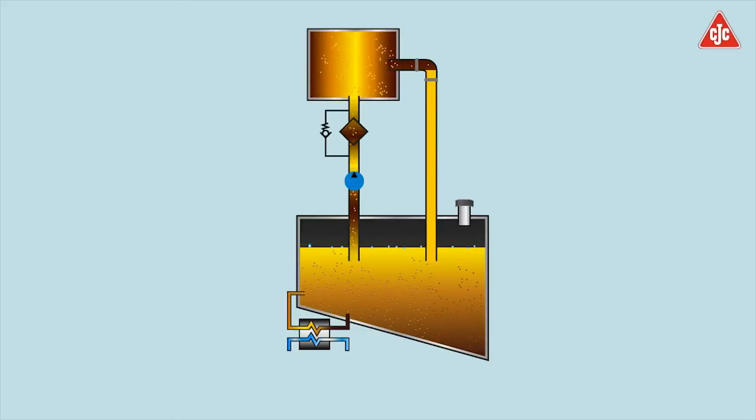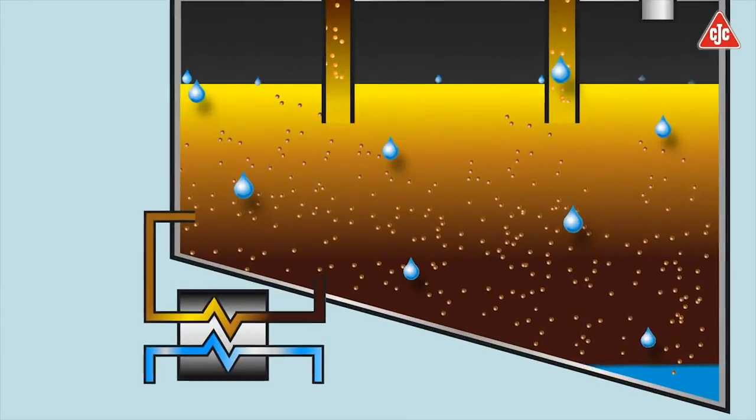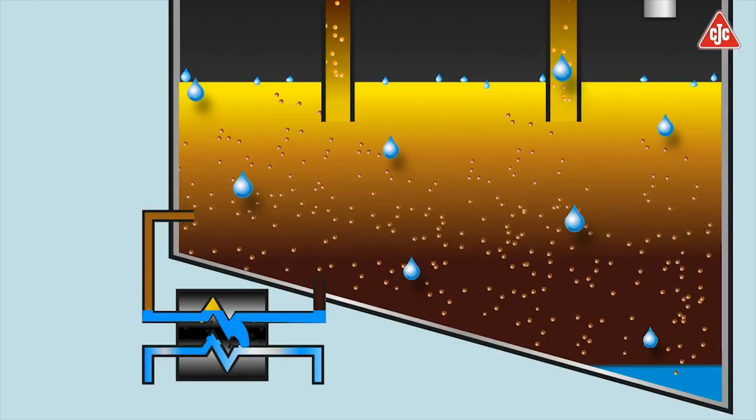Oil contamination accounts for 80% of all failures in an oil system. Water appears in the form of humidity from external sources or, for example, a failure in the cooling system, where water enters the oil system and damages the components.